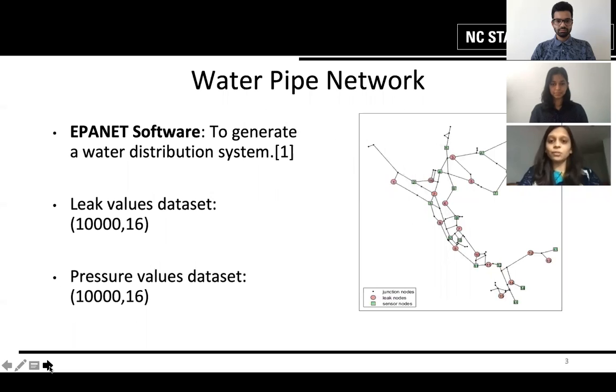The water leak detection model is as shown in the figure. The dataset is obtained by simulating it on the EPS software which is used to model the water distribution system. It has 16 pressure nodes and 16 leak nodes.